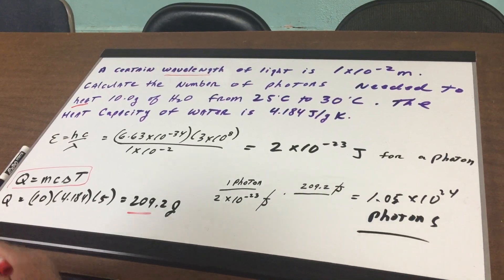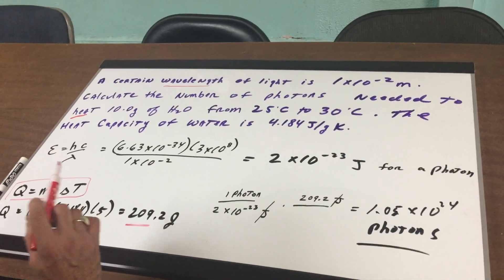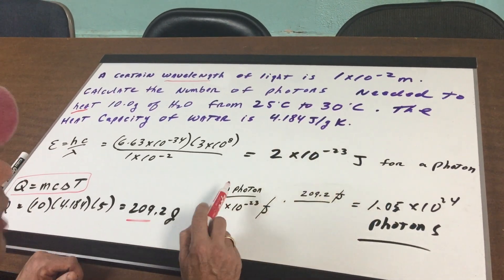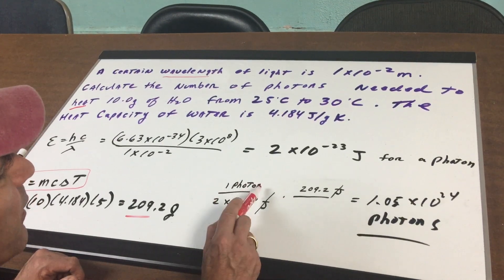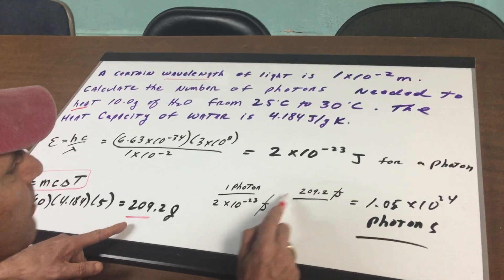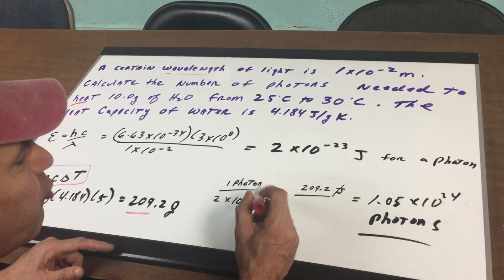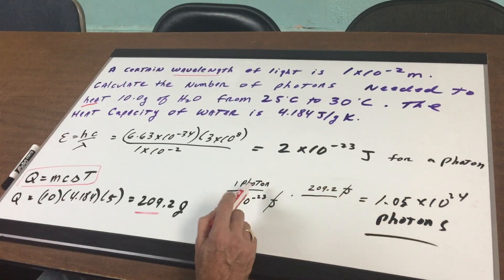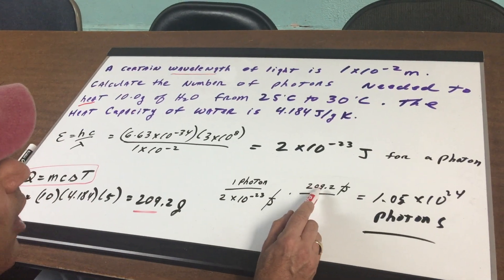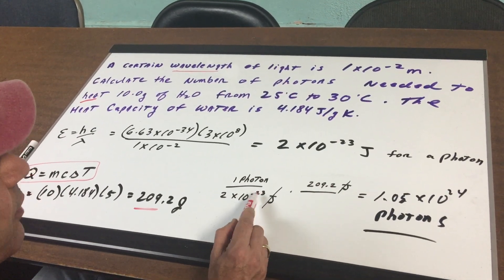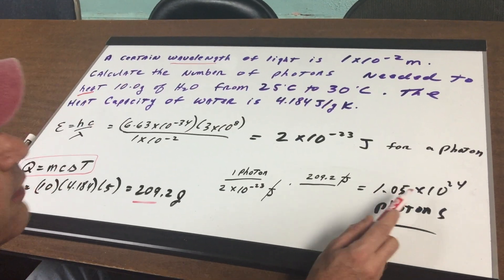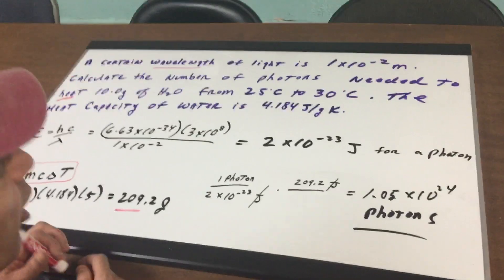Now, the question is we want to find the number of photons. So how would I do it? Well, we have two numbers. We know that one photon is 2 to the minus 23 joules. If you times that by 209.2 joules, the joules cancel out and you're left with photons. So it's going to be 209.2 over 2 to the minus 23rd, and you came up with approximately 1 to the 24th photons.